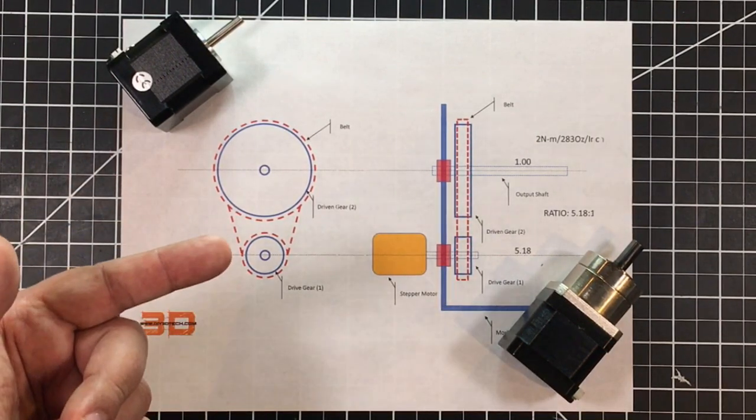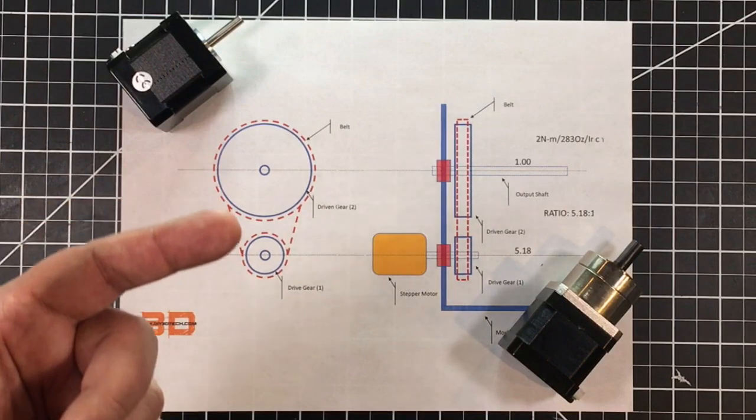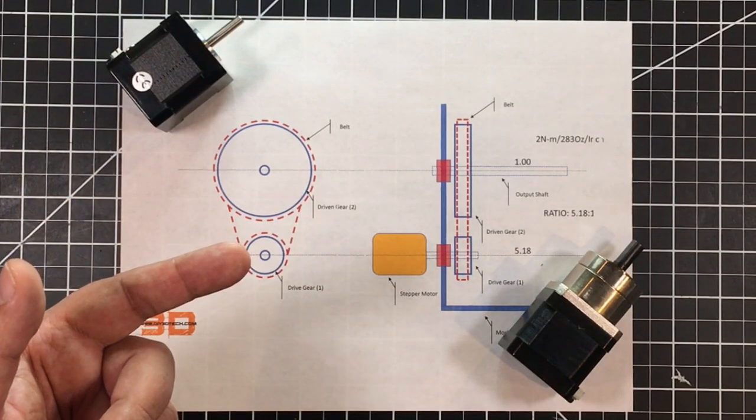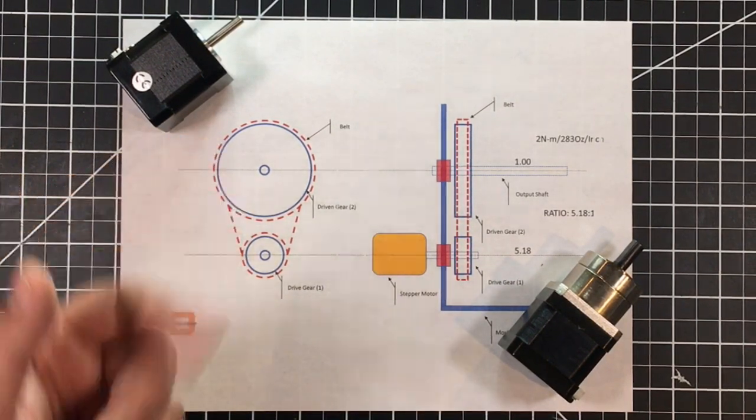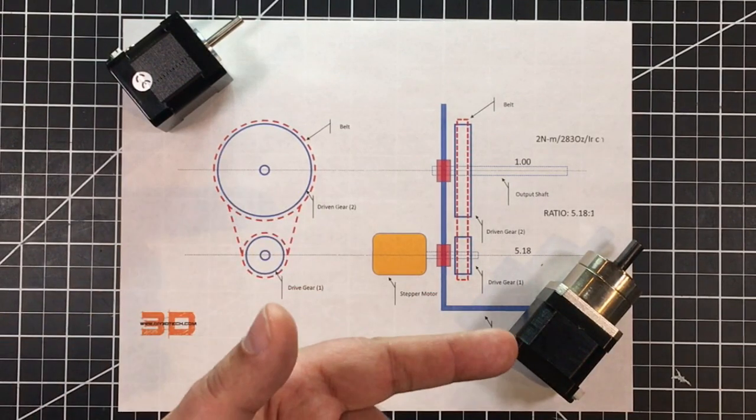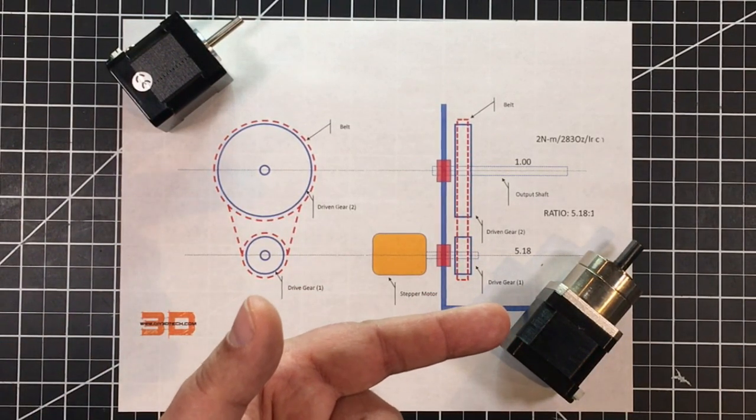You have a ratio of number of turns of a small gear to that of a larger gear to increase the torque. In the case of this guy here, this is a 5.18 to one ratio.